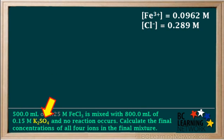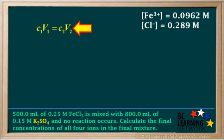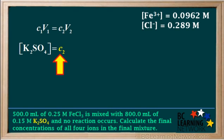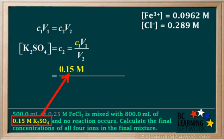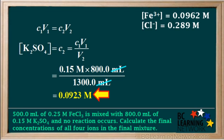Now we've finished with FeCl3, so we go through the process with the other compound, K2SO4. In step 1, we use the dilution formula to calculate the concentration of K2SO4 as a whole. C2 is equal to C1V1 over V2. The initial concentration C1 is 0.15 molar, and the initial volume V1 was 800 milliliters. The final volume V2 is 500 plus 800, which equals 1300 milliliters. Canceling out the milliliters, 0.15 times 800 divided by 1300 gives us 0.0923 molar. So the concentration of K2SO4 as a whole after mixing is 0.0923 molar.